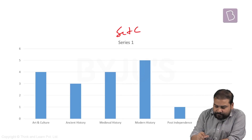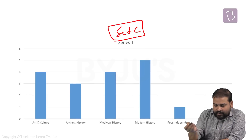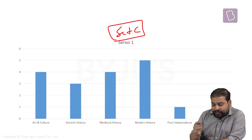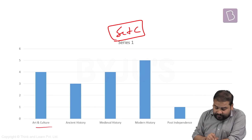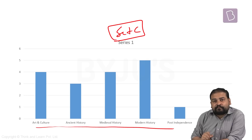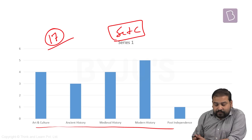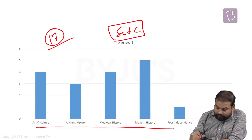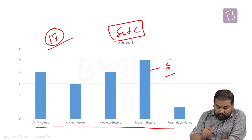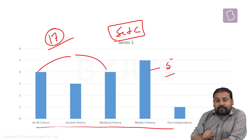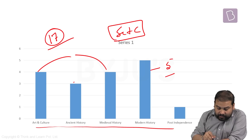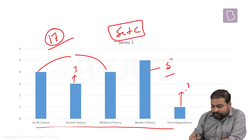This is Set C and if you look at the questions, questions were divided in five parts. Total 17 questions were asked from the history segment, where maximum five was from modern, four each from medieval as well as art and culture, three from ancient and one from post-independence.